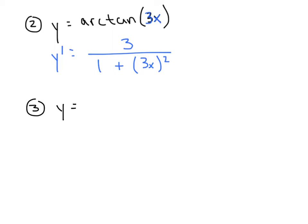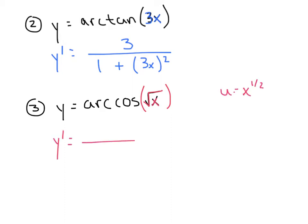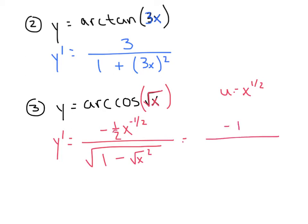Let's try arccos(√x). My u is √x, or x to the 1/2. Going through the derivative, I need to negate du. So it's negative (1/2)x^(−1/2) all over √(1 − u²). Cleaning that up: I'll send the 2 and the x to the denominator, giving negative 1 over 2√x · √(1 − x). That's probably how I would leave my answer.